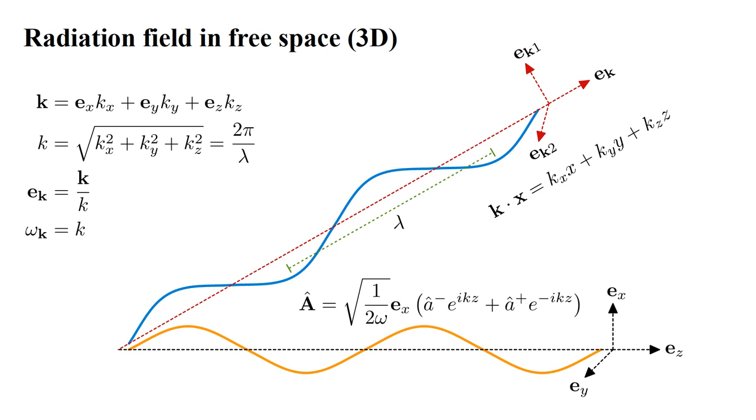In place of k times z in the one-dimensional expression, we will have wave vector k dot position vector x, = k_x x + k_y y + k_z z. Then the field operator for this mode is Â = √(1/2ω_k) e_{k,α} times [â_{k,α} e^{ik·x} + â†_{k,α} e^{-ik·x}].